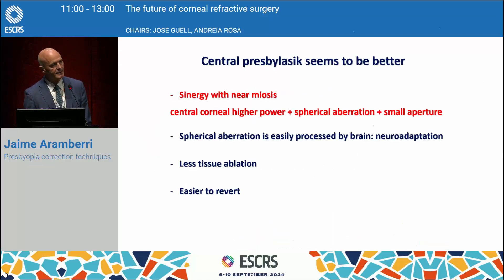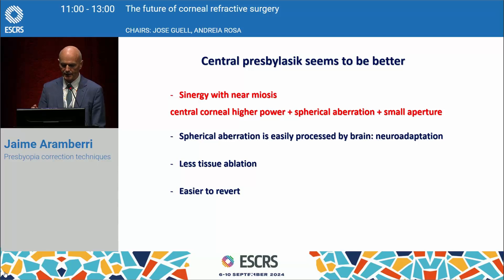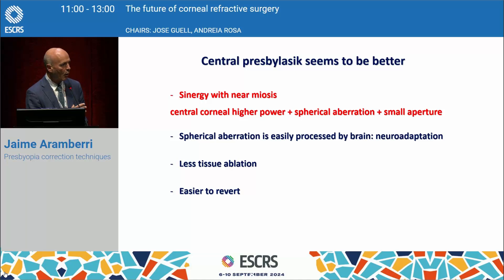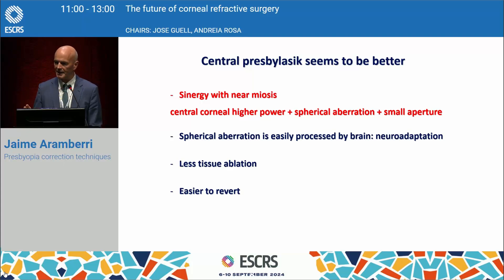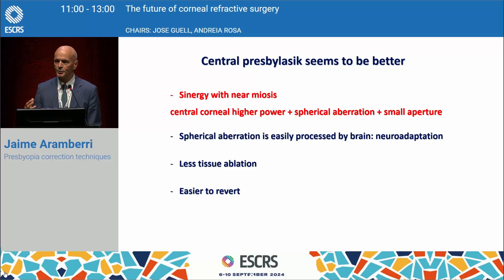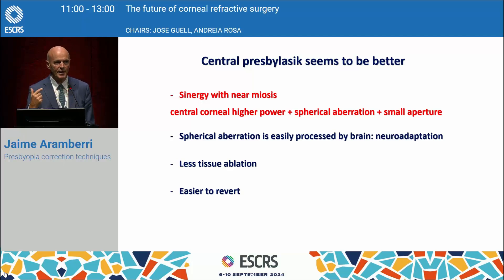Central presbyLASIK seems to be better. The main reason is that there is a synergistic effect with near miosis: central corneal higher power, plus its induced spherical aberration, plus the small aperture, are all playing in favor of good near vision. Generally speaking, central presbyLASIK is better than peripheral. Beyond that, spherical aberration is an easily processed aberration by the brain, because this is a natural aberration in our eyes — there is a facility for our brain to adapt to that.